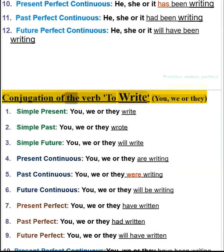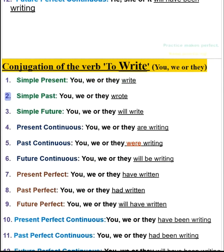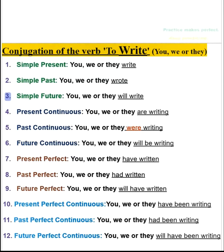Conjugation of the verb to write. You, we or they. 1. Simple present: you, we or they write. 2. Simple past: you, we or they wrote. 3. Simple future: you, we or they will write.